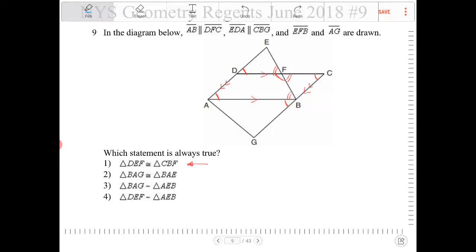What about justification for them to be similar, BAG and ABE? There's not enough information to justify these two as being similar either, because I only see one corresponding angle that's congruent. Which one am I seeing? I see this angle and this angle, but we don't have any other information about any other angles.